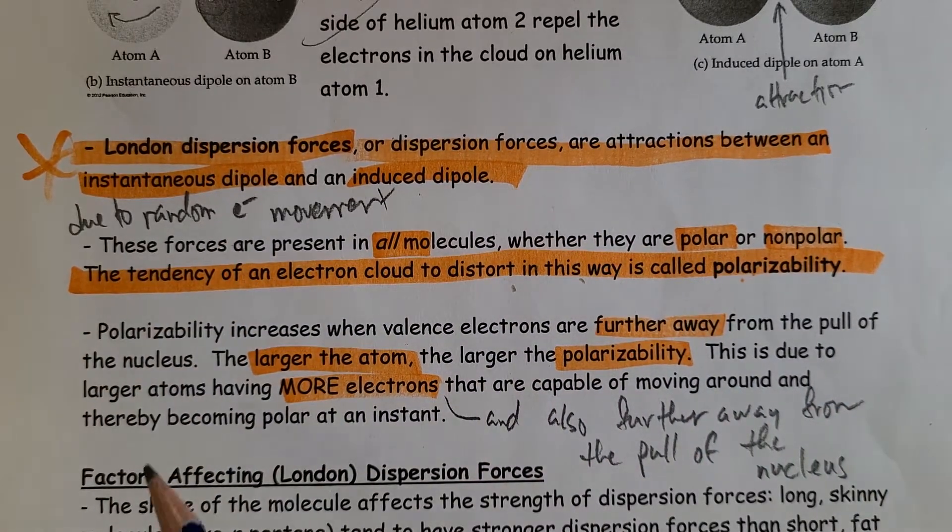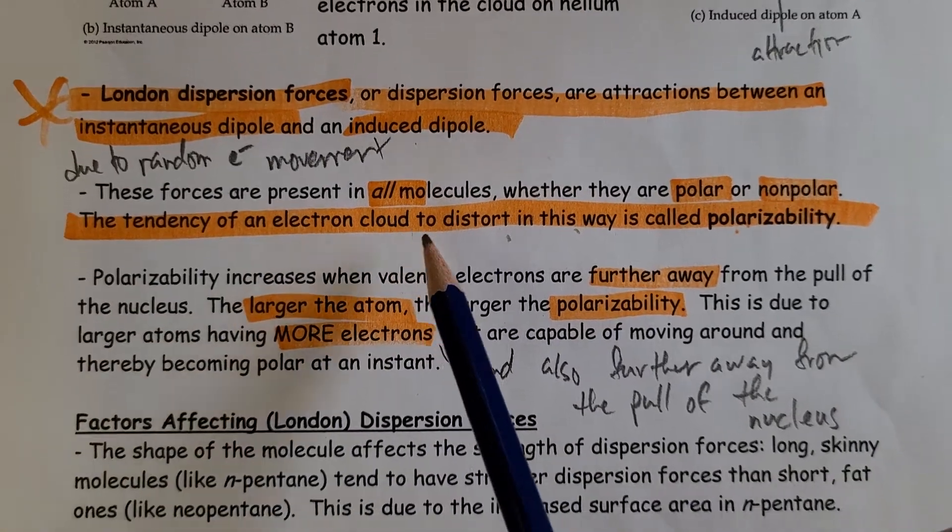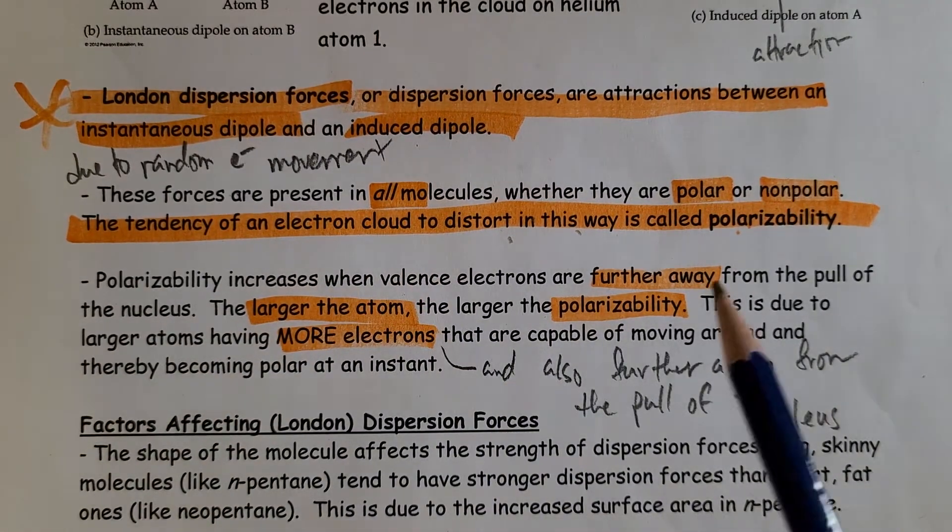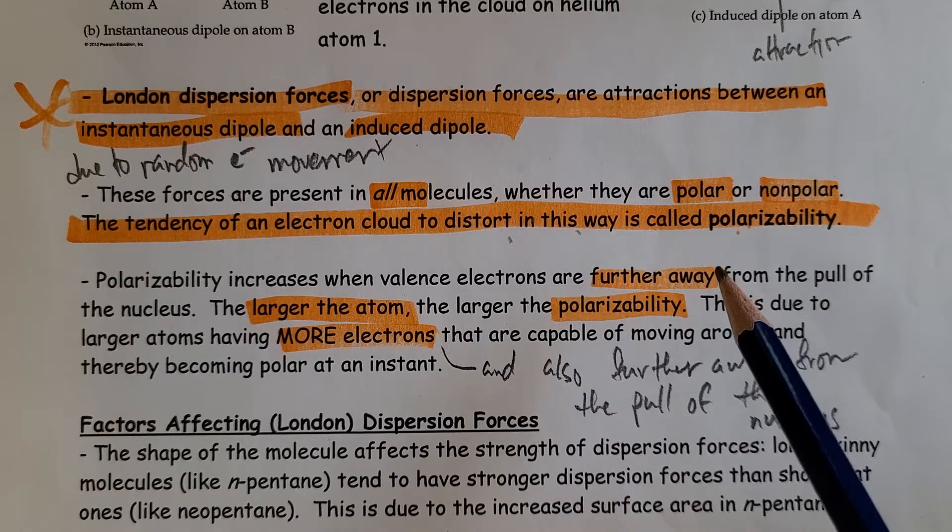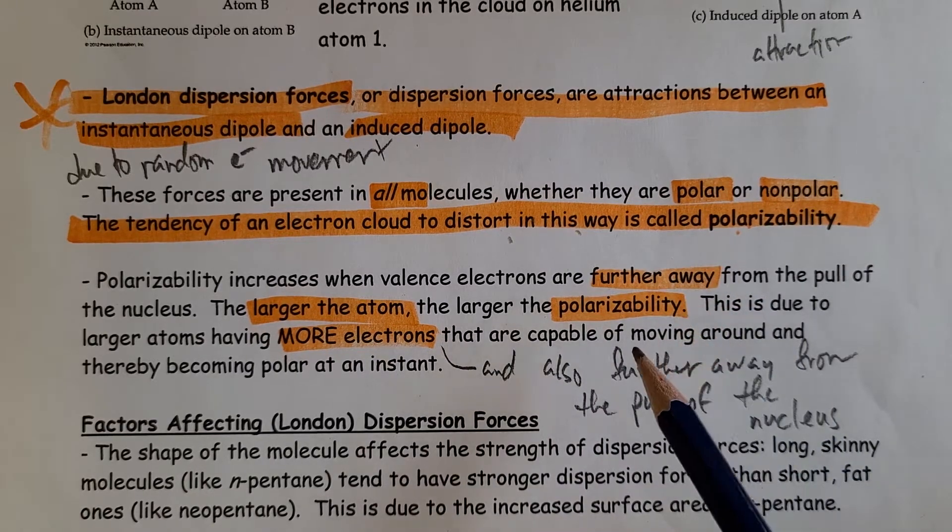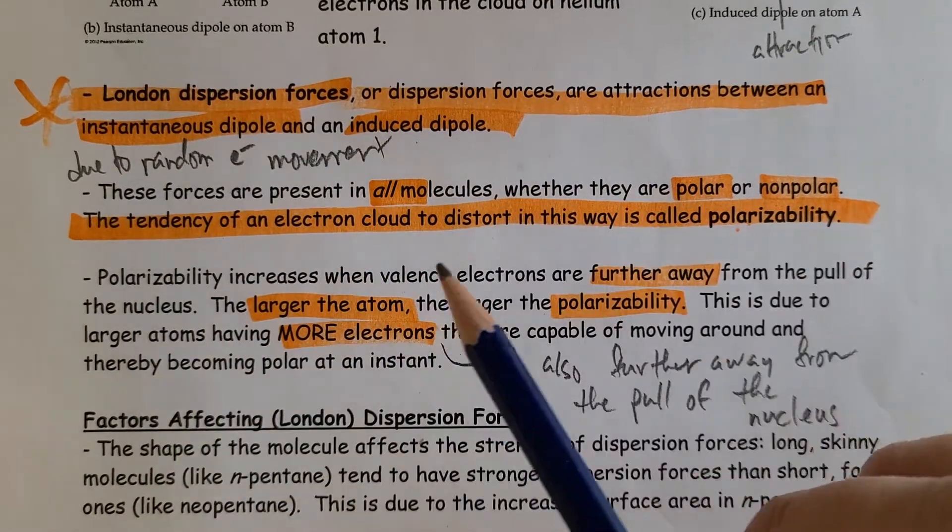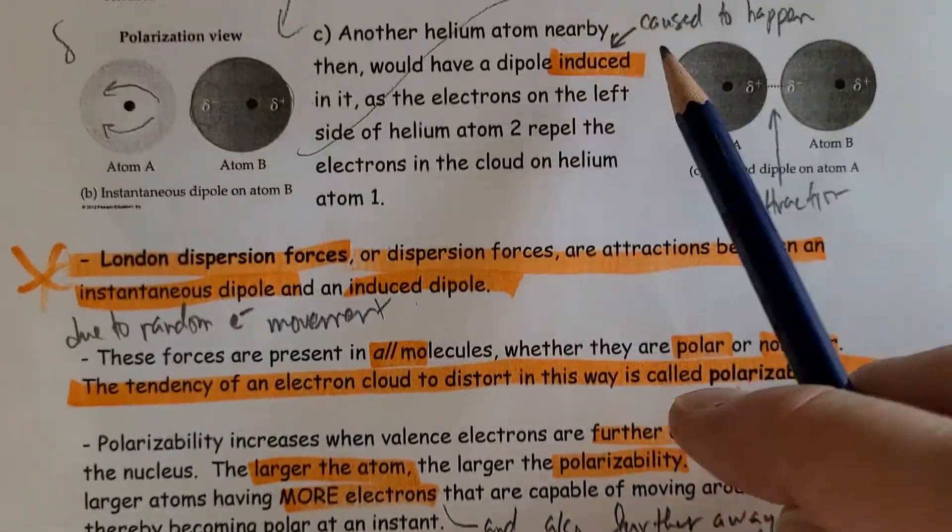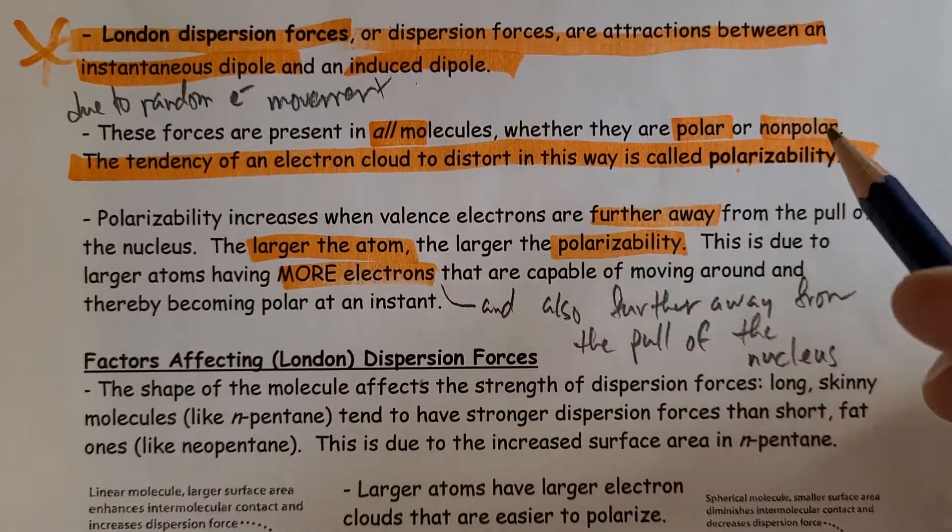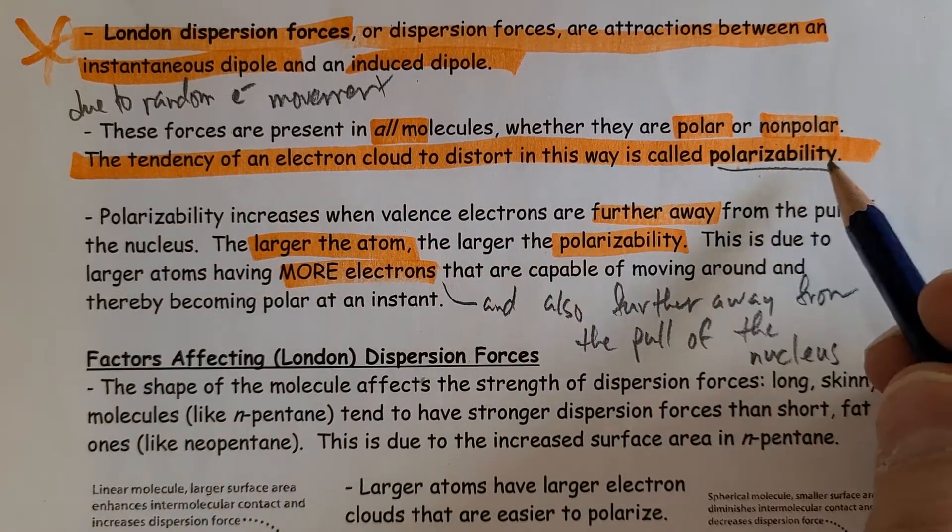Those are called London dispersion forces or simply dispersion forces. Again, due to random electron movement, key things to note: this happens in all molecules, whether they are non-polar or polar. And the tendency of electrons to move around and collect on one side of an atom or molecule is called polarizability.